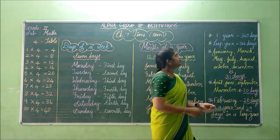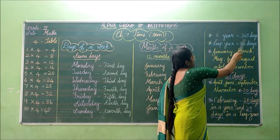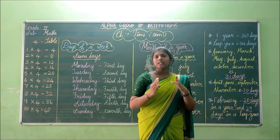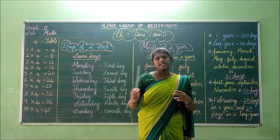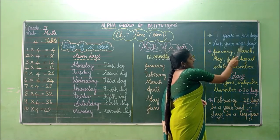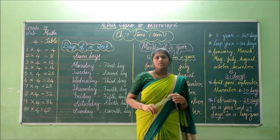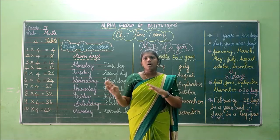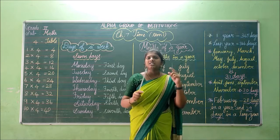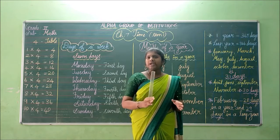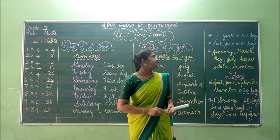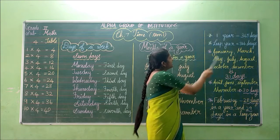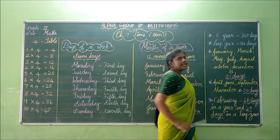Next, 1 year is equal to 365 days. So in a year, how many days are there? 365 days. And in a leap year there are 366 days. So you will get a leap year once in 4 years. In that leap year you will have an extra 1 day. So in a normal year you will have 365 days, and in a leap year you will have 366 days.